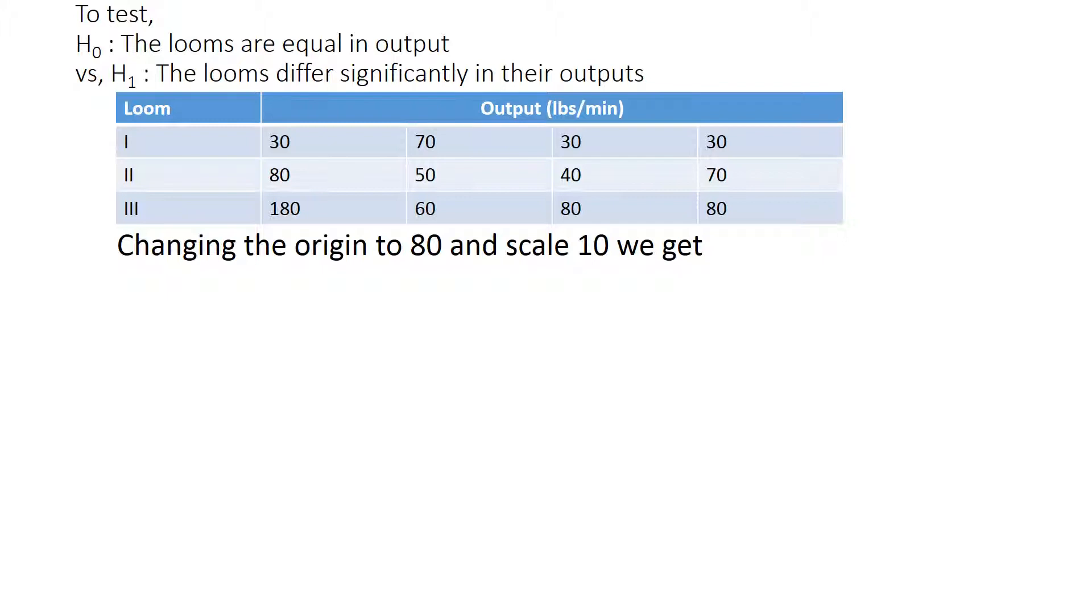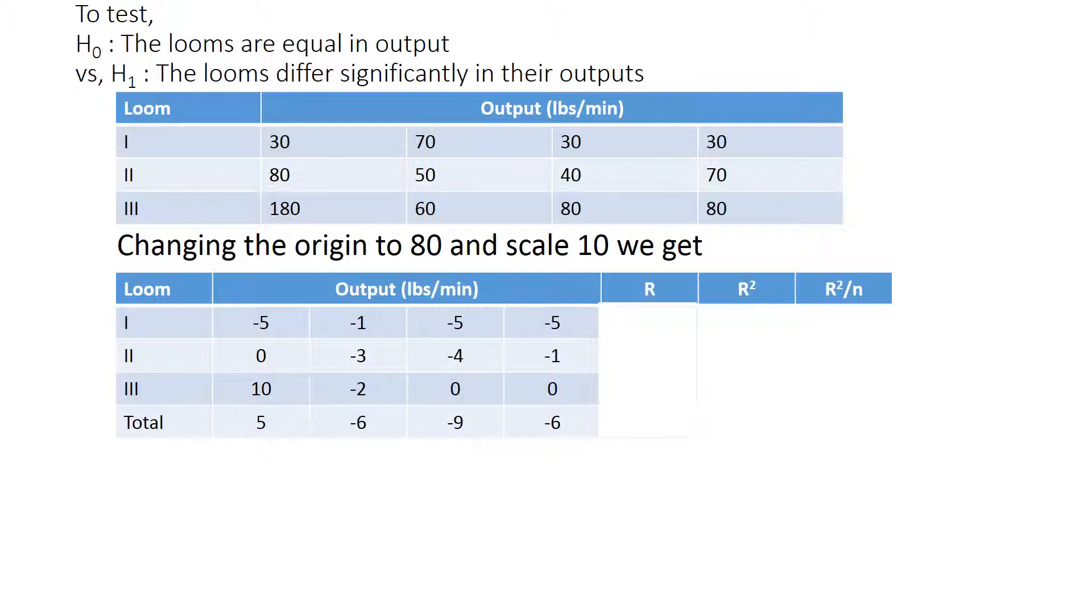Let's see. Changing the origin to 80. We subtract all terms by 80 and then scale by dividing by 10. What we get is: 30 minus 80 is negative 50, divided by 10 is negative 5. This is done because the F table, when we finally compare the value from the F table, the F values are unique. It doesn't matter if we change the origin or change the scale, so we can do it. Especially if we have got simpler data or zeros, it's kind of easier than using the data directly.